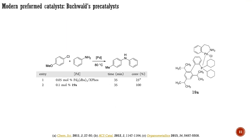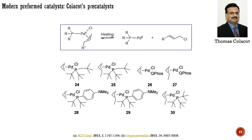Here is another good example of how advantageous pre-catalysts can be over in-situ-generated catalysts. The conversion of 4-chloroanisole in the Buchwald-Hartwig amination initiated by the catalyst generated from the mixture of palladium-dibenzylideneacetone complex and XPhos was just 25%. Meanwhile, for the same reaction performed with the XPhos palladium G1 pre-catalyst, the conversion of the limiting reagent was complete. One of the most recently introduced pre-catalysts is the palladium-2-allyl complex bearing a suitable bulky ligand, predominantly developed in the group of Colacot. These systems share some similarities with Buchwald's pre-catalysts in terms of generating catalytically active palladium-0 species through reductive elimination of an allyl chloride or other related products upon heating.